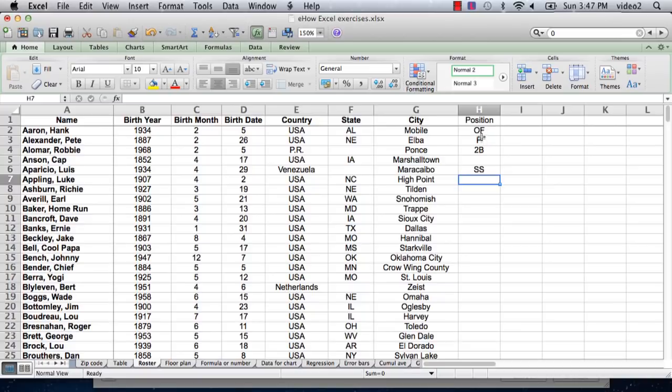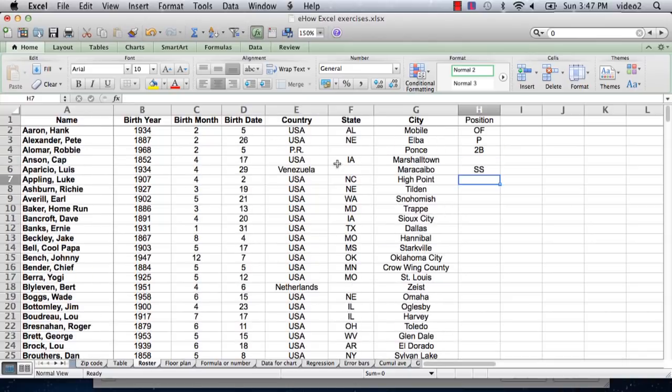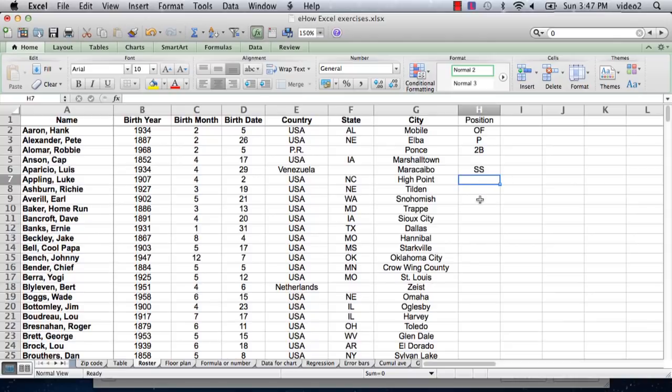And they've done that here. You can see the birth year is just a four-digit number, the birth month is a number corresponding to the month, etc. The country is always in the same format. That's very important to keep in mind when you want to do something with a roster like this or any spreadsheet in Excel.